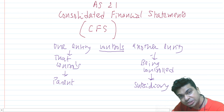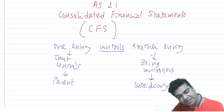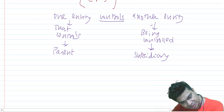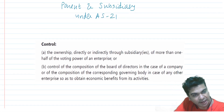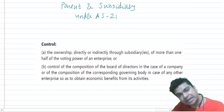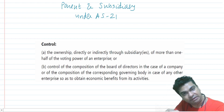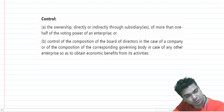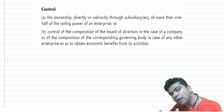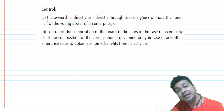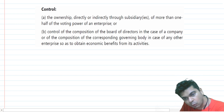I will apply AS 21 when there is a parent-subsidiary relationship, which exists when one entity is able to control another entity. So when can we say that one entity is controlling another? Under AS 21, there are two ways in which one entity can establish control over another. The first way is: directly or indirectly acquiring more than one half of the voting power of an enterprise.